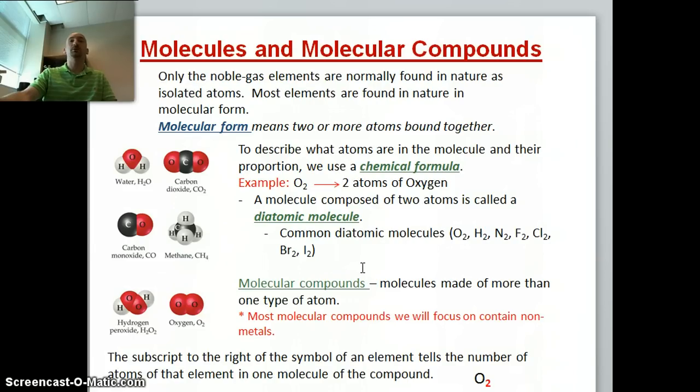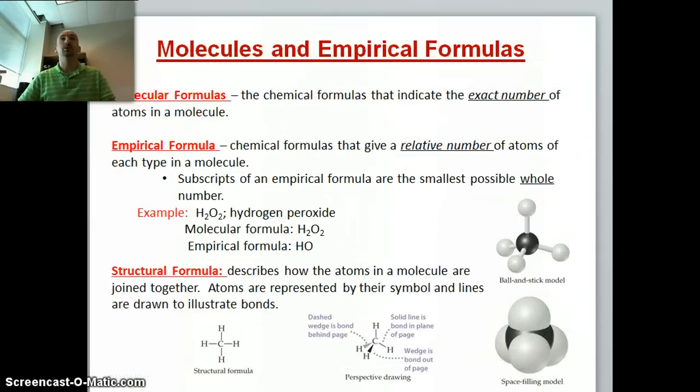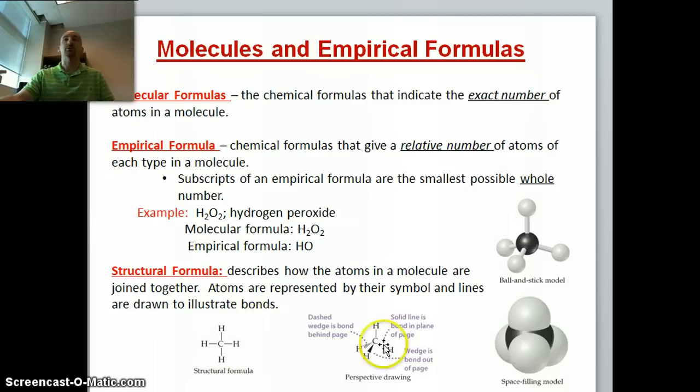A molecular compound is a molecule composed of more than one type of atom, and these are much more common. When we talk about molecular compounds, we can describe them either with a molecular formula, an empirical formula, or a structural formula. The molecular formula is just the exact number of atoms in a molecule, whereas the empirical formula is the relative number of atoms, like a ratio. You can figure out the empirical formula if you were given the molecular formula, but not vice versa. Molecules can be described as a structural formula, which describes how the atoms in a molecule are joined together, and these can be in some different types of drawings.